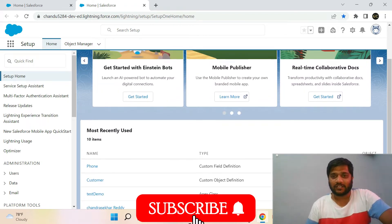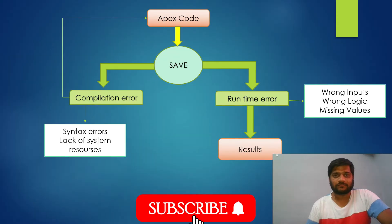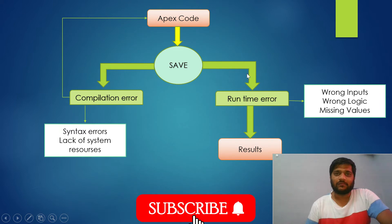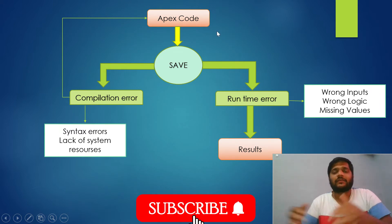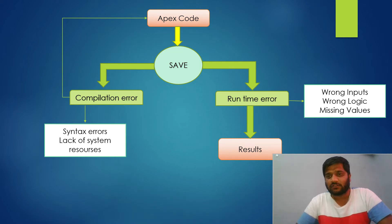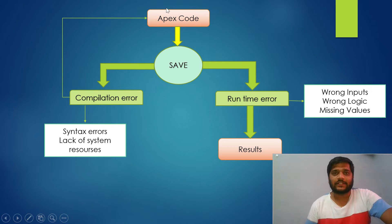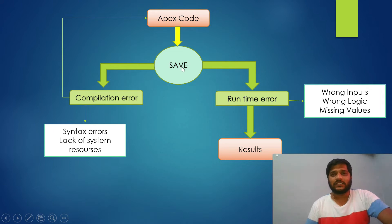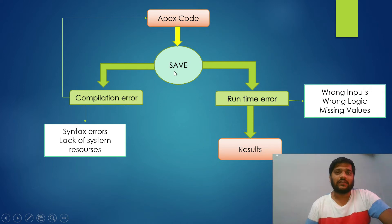Let me show you the topic. This is the sample diagram. If we are doing an Apex code, this is the basic Apex code. We are doing a save operation. Once it is successfully saved, then we are going to execute the result. In this process, there are two types of errors.